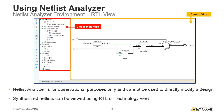On the leftmost side of the window are the RTL and Technology view icons. Selecting either of these icons will open a new Netlist Analyzer tab with that view. We will now introduce Netlist Analyzer's Technology view.